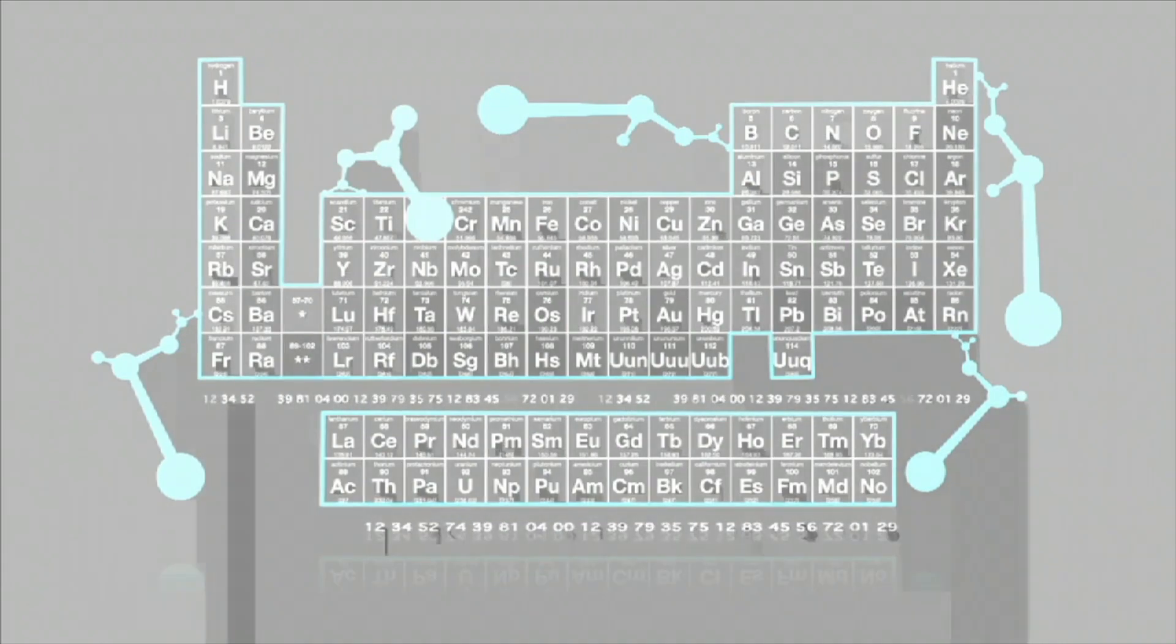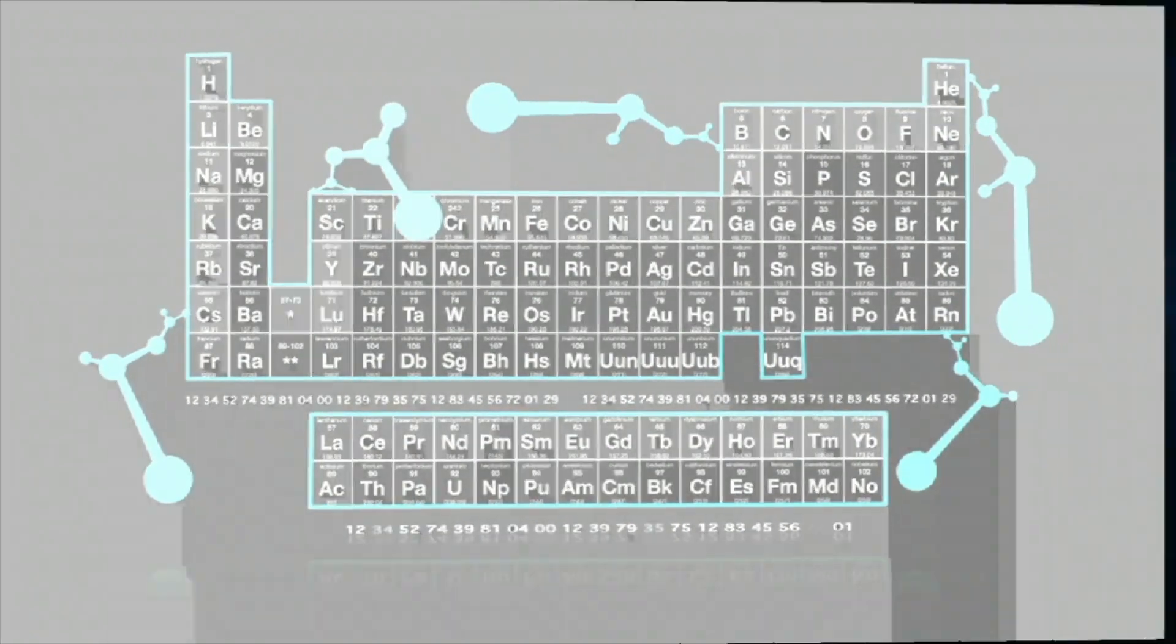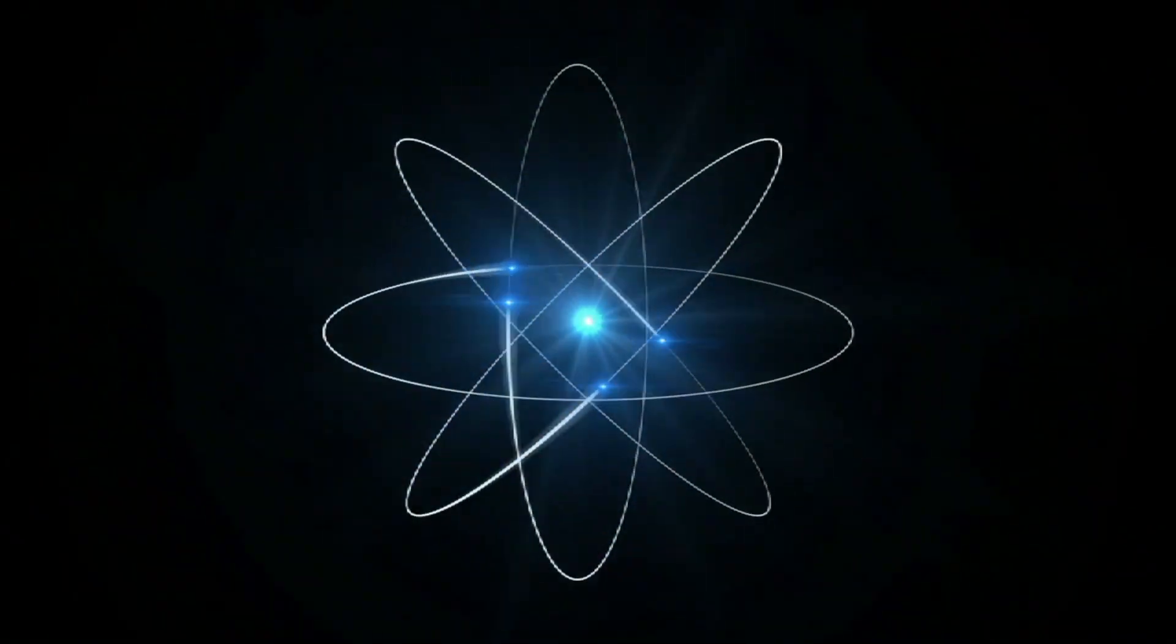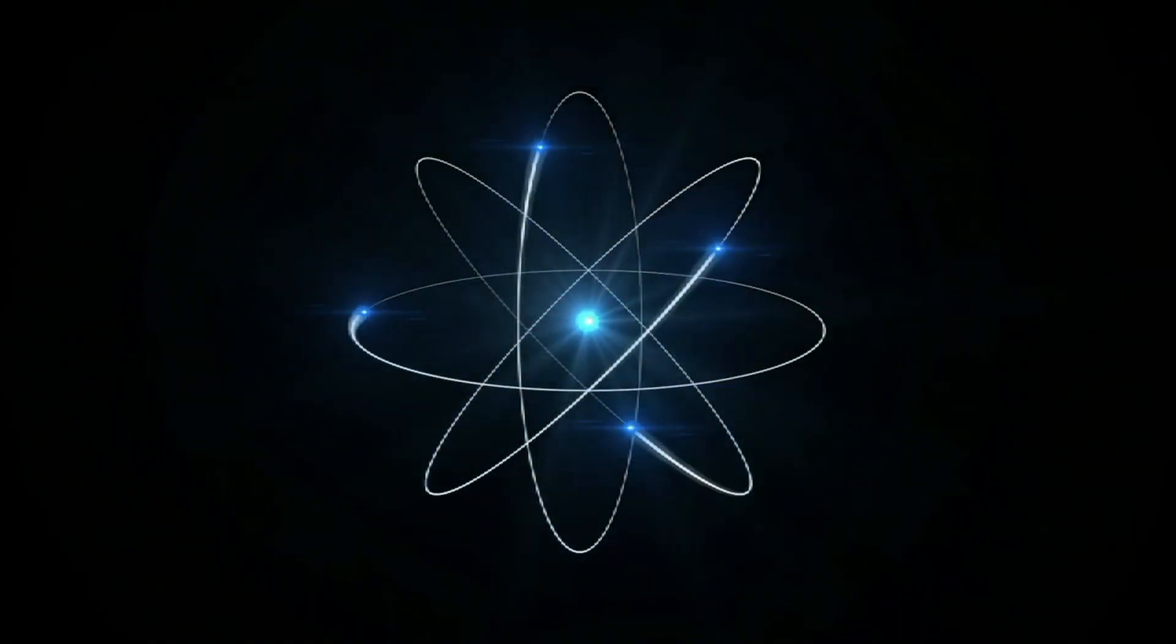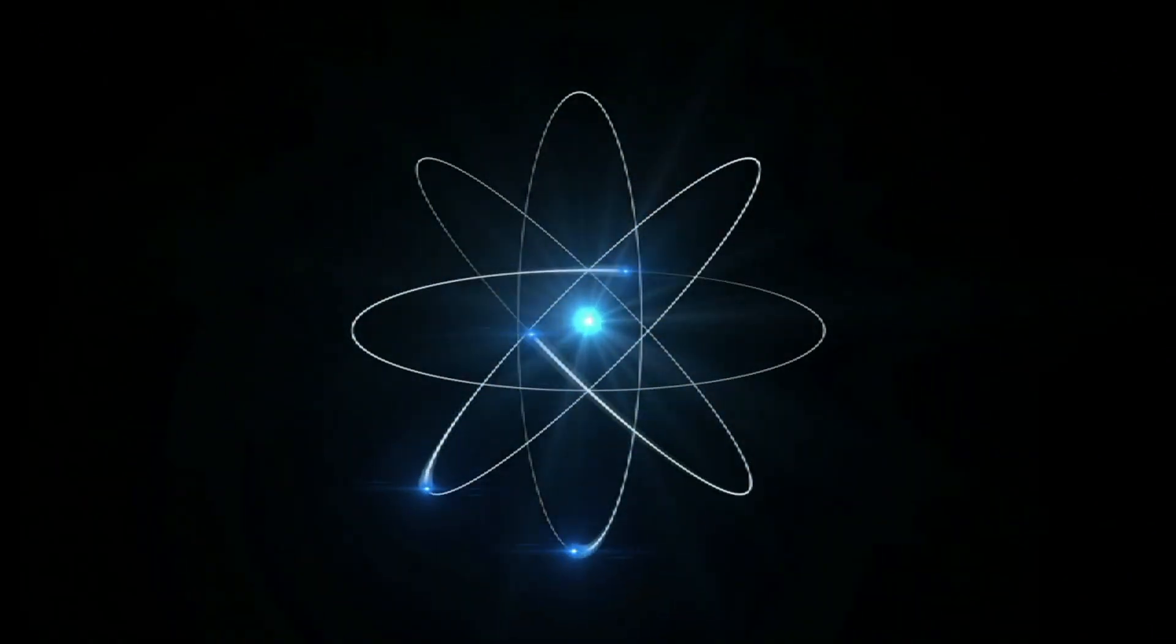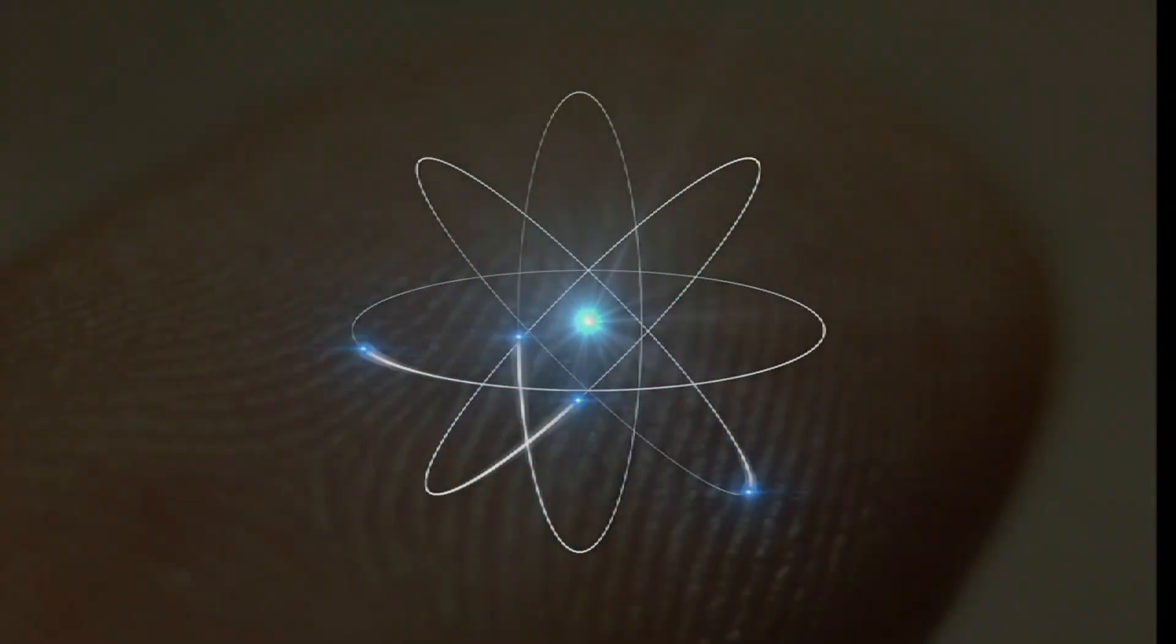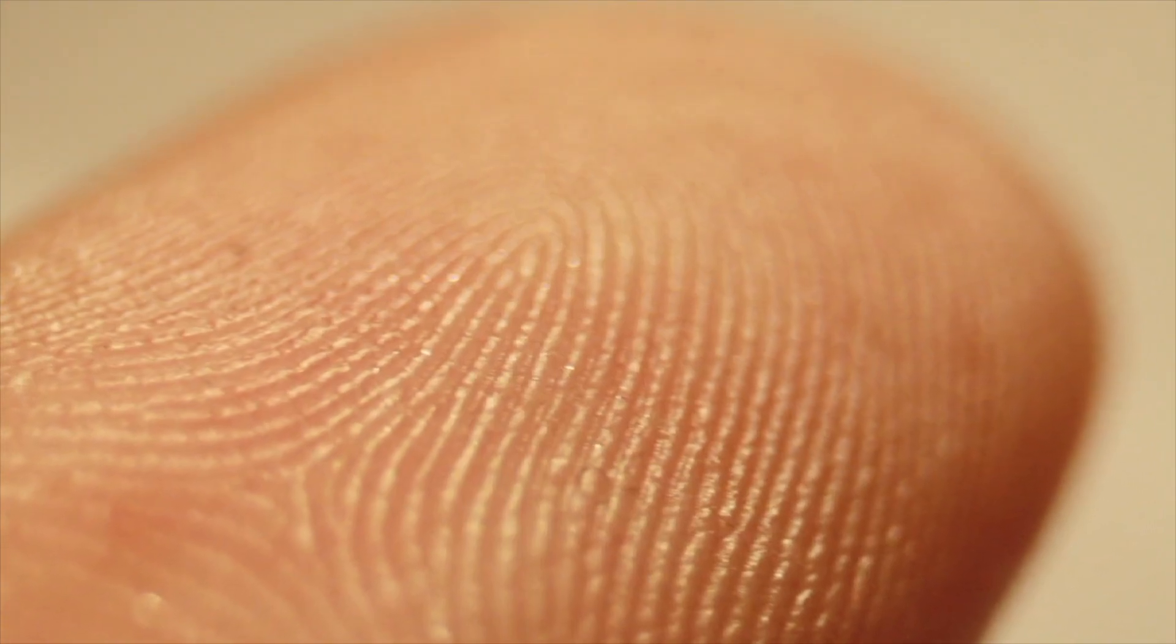There are currently 92 naturally occurring elements. Each element is atomically individual, completely made of specific atoms that are unique to that element and only that element. An element is sort of like a fingerprint. It's unique.